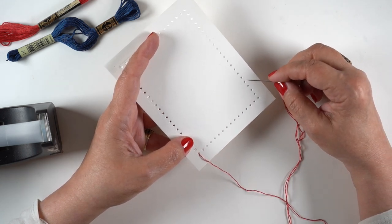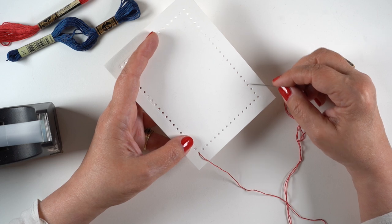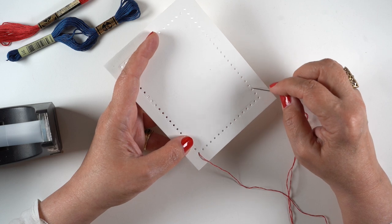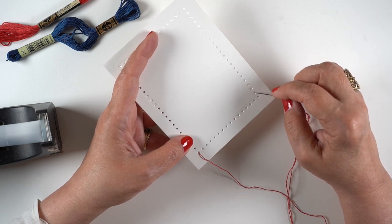This particular one, I counted out 16 holes on one side and 20 holes on the other. And that means I can go in groups of four. So I can do four reds, four blues, four reds, four blues.